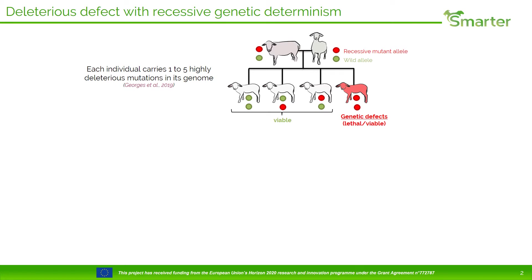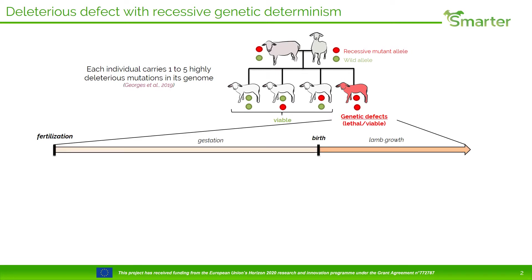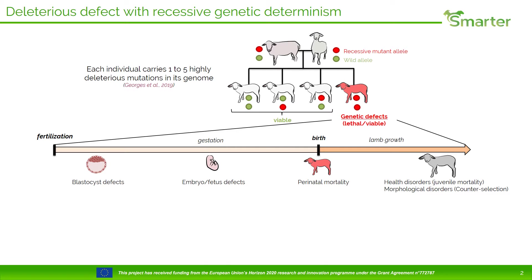The main goal of my work is to identify deleterious defects with recessive genetic determinism. We know that each individual carries one to five highly deleterious mutations in its genome. Especially in livestock populations, these recessive mutations can be found in the homozygous state and be responsible for genetic defects that can be lethal or viable. This lethality can occur during several development stages, at birth, or affecting the lamb. Genetic defects can be associated with health disorders that could lead to juvenile mortality or morphological disorders.